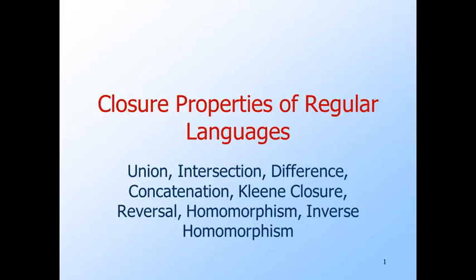Today's topic is closure properties for the regular languages. A closure property is a statement about a certain operation on languages that says, when the arguments are languages in the class, then so is the result. You can see on the title slide the list of closure properties for the regular languages that we are going to discuss.